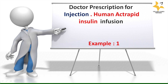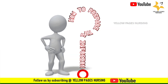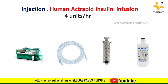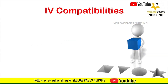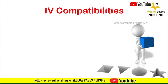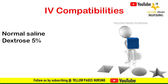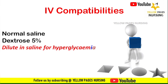The doctor's prescription for injection human actrapid insulin infusion is 4 units per hour. To prepare the infusion, we need a syringe pump, a PBM line, a 50 ml syringe, and the solution for dilution. IV-compatible solutions for diluting actrapid are normal saline and dextrose 5%.